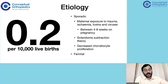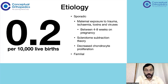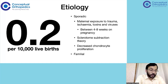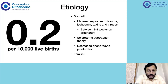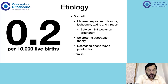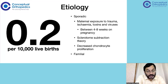This is an extremely rare condition, only 0.2 per 10,000 live births. Regarding etiology, it is postulated to be sporadic due to maternal exposure to trauma, ischemia, toxins, or viruses, generally between the fourth to eighth week of pregnancy, because that is the time when the hip and proximal femur develop. Other etiologies exist, however none have been proved. In a few conditions, even familial cases of congenital femoral deficiency and other limb deficiencies have been seen.